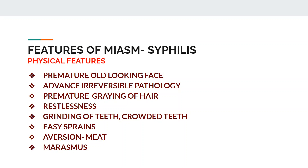The physical features include a premature old-looking face and advanced irreversible pathology. When pathology is advanced and irreversible, it is syphilitic miasm. There is degeneration and destruction leading to advanced irreversible pathology. You will see cirrhosis and malignancy cases. The patient has premature greying of hair, restlessness, grinding of teeth, crowded teeth, easy sprains of joints, aversion to meat, and may present with marasmus — malabsorption with emaciation and a large belly.